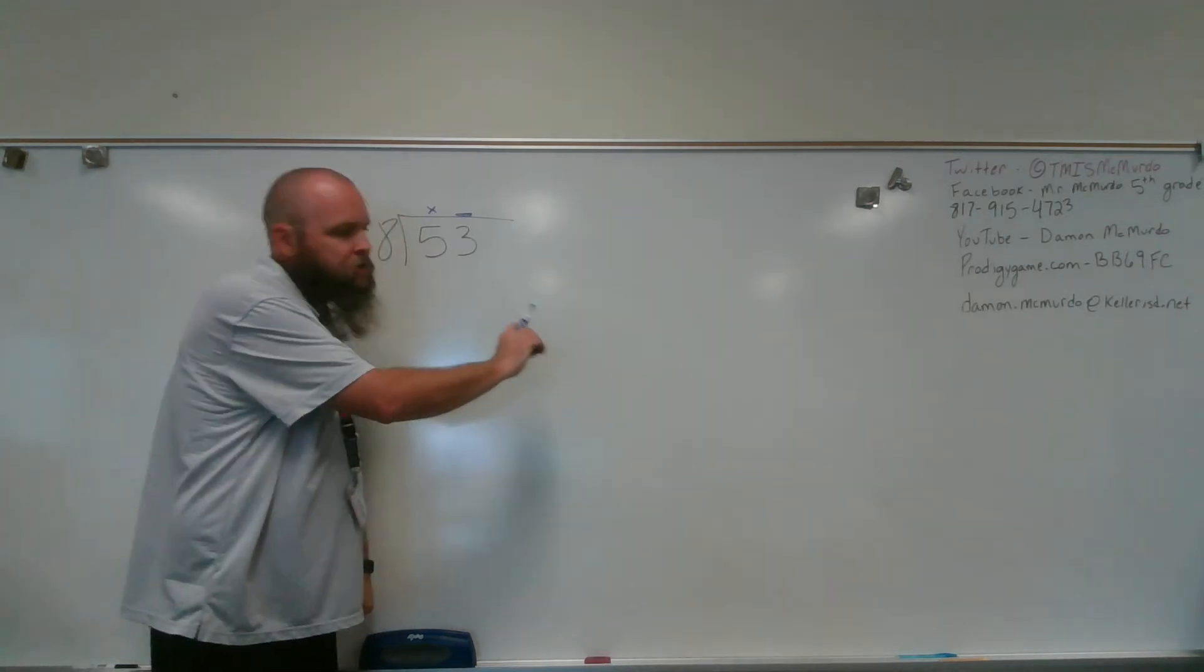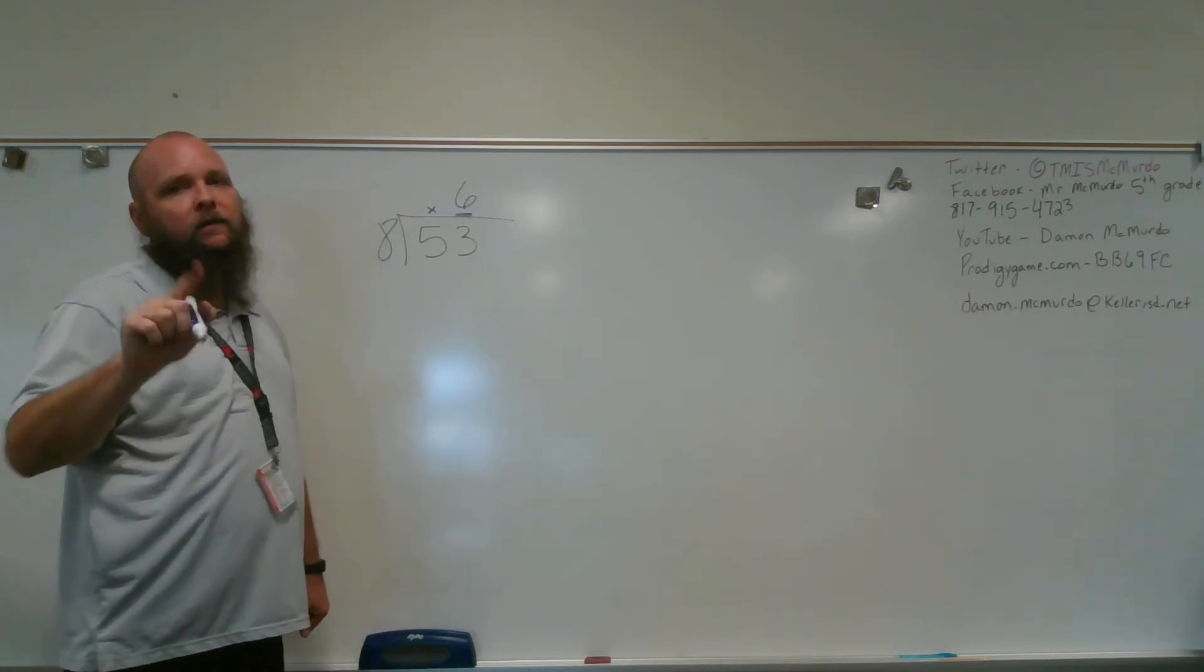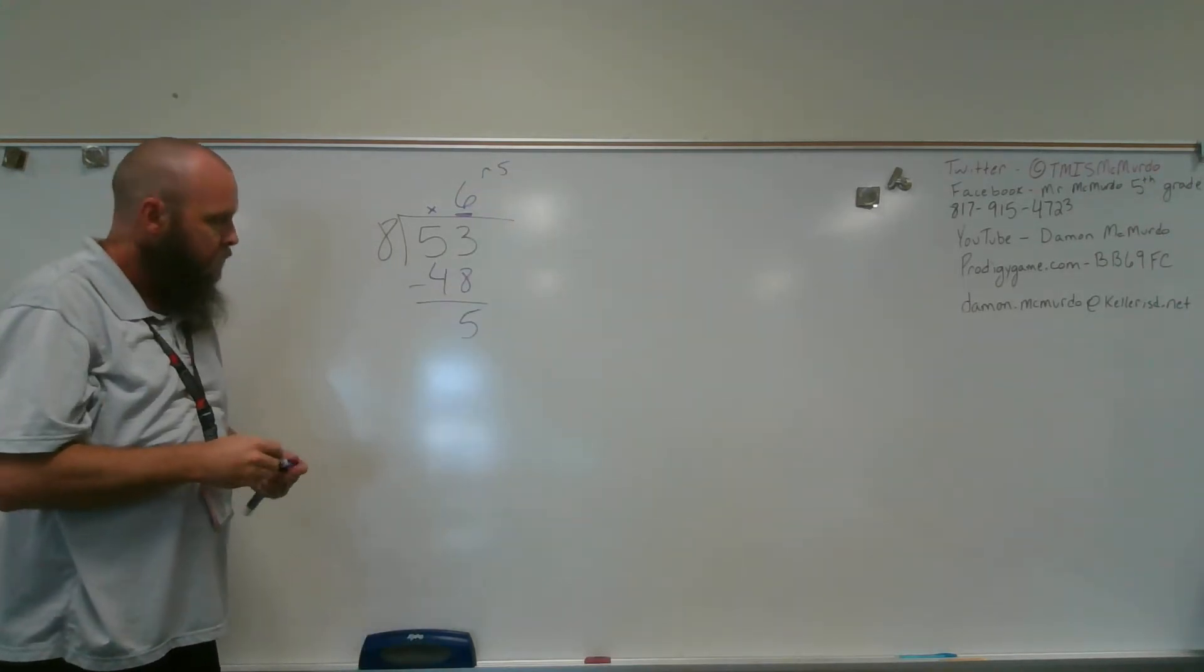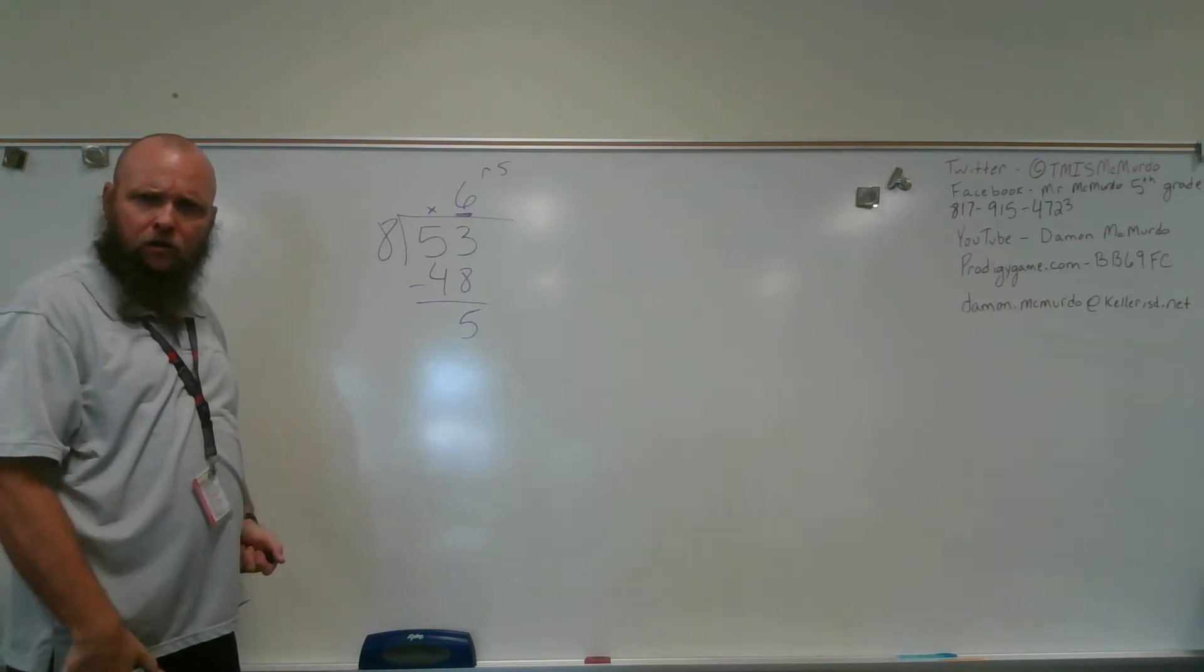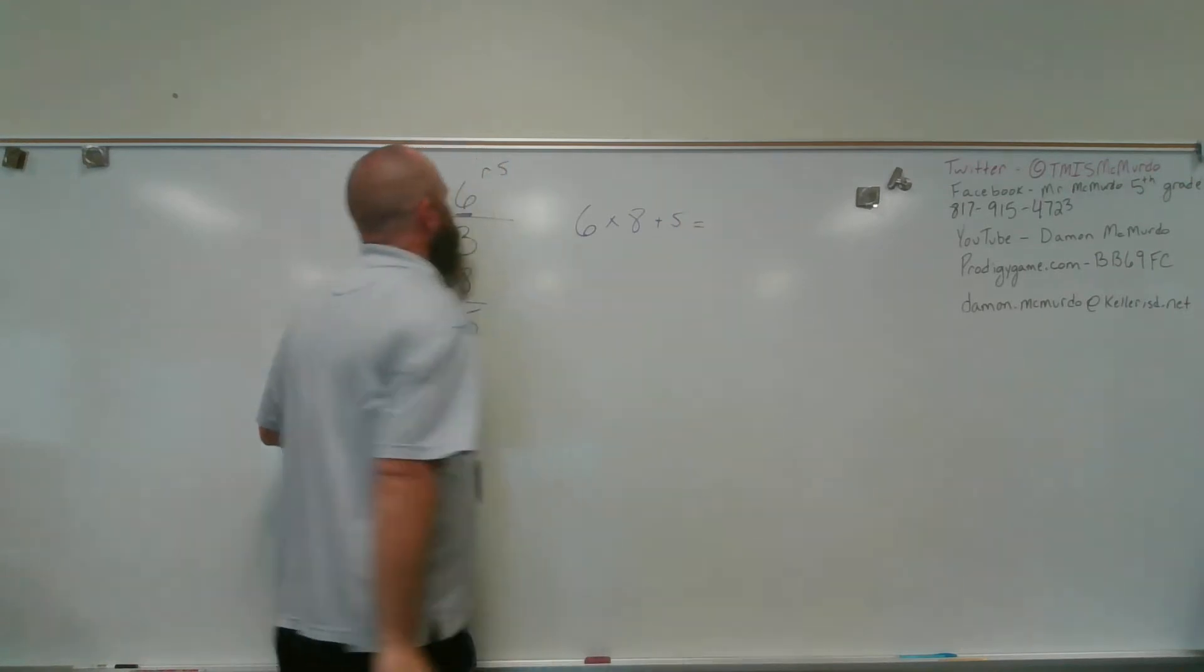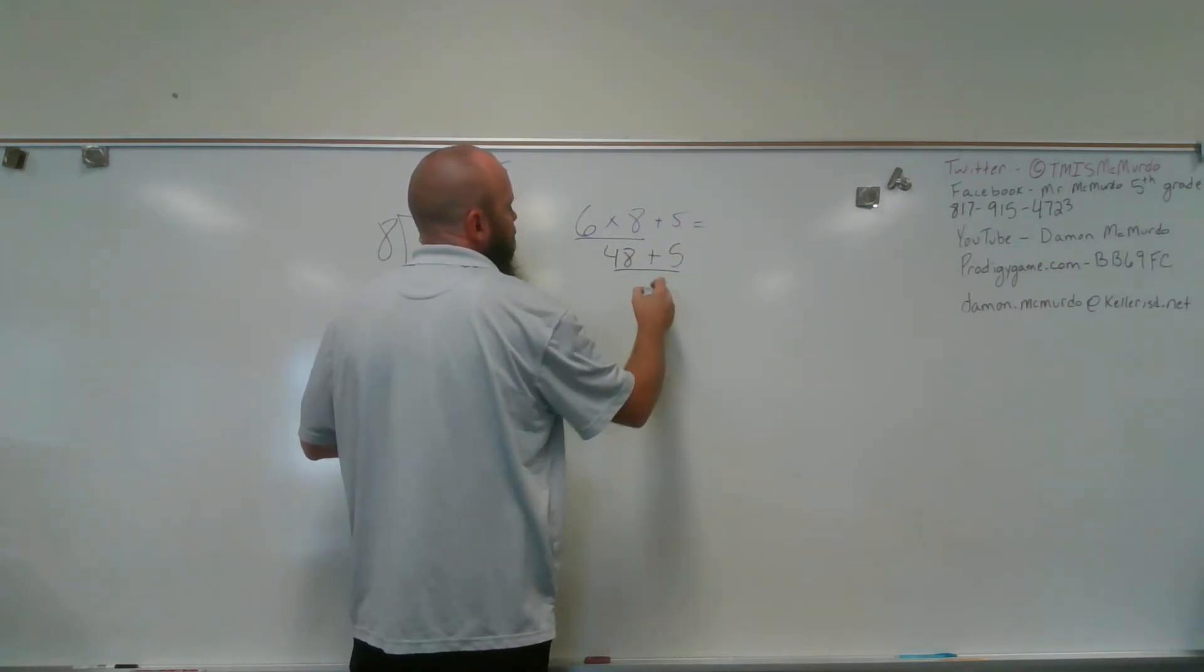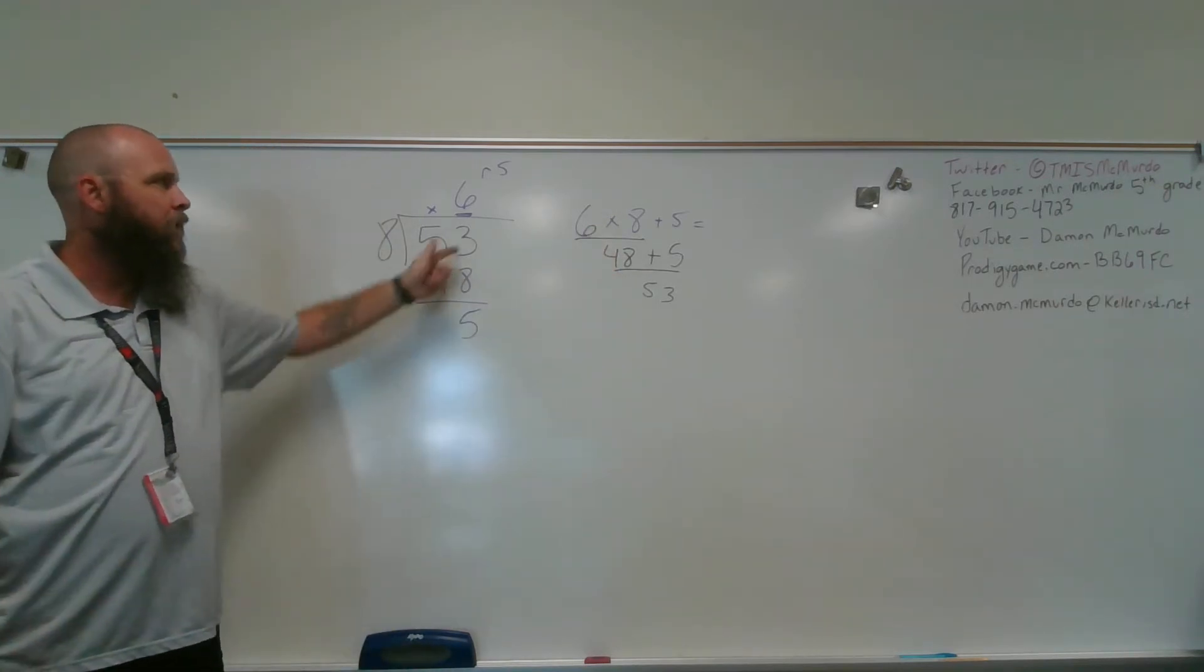8 into 53, I look at my multiplication chart, go down my 8s, 8 times 5, 8 times 6. 8 times 6 is what? Good job, Bob, 48. I subtract, and I get 5, 6 remainder 5, because I have nothing else to bring down. So I know that's my remainder. It is less than my divisor, so I'm pretty good. What's that? You want to check it? Are you sure? Okay, we'll check it. Should be 6 times 8 plus 5, and that should equal 53. 6 times 8, as we already determined, is 48. And 48 plus 5 does equal 53. So doing the inverse operation, using multiplication, adding the remainder in, shows me that my answer here is correct.